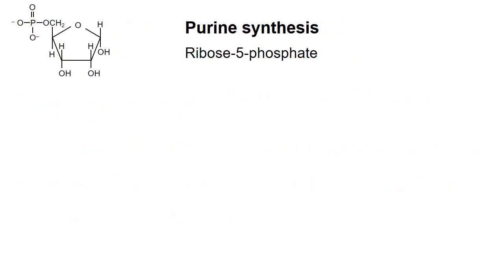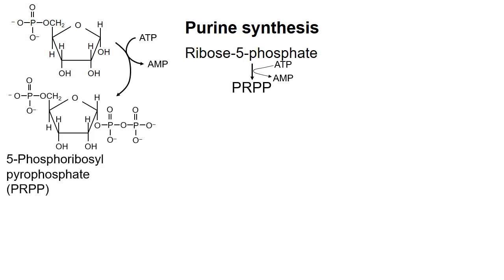Synthesis of purines starts with ribose 5-phosphate, which is made in the pentose phosphate pathway. The first step of synthesis is to activate the anomeric carbon by adding pyrophosphate from ATP. This produces 5-phosphoribosyl pyrophosphate, or PRPP. From here, the strategy is to add pieces to the 1-prime carbon, building bit by bit until the purine ring structure is assembled.